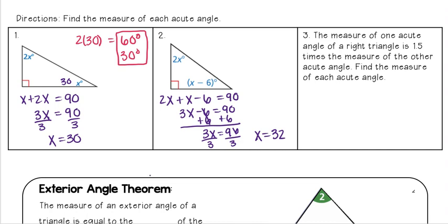Now I have to do a little more work to find these angle measurements. I'm going to first find 2x. Well, I know x equals 32, so I just have 2 times 32 to get me 64 degrees. Then I need to plug in x for this number here, so instead of x I have 32 minus 6, which equals 26 degrees. And again, I can check my work: 64 plus 26 does in fact get me 90.